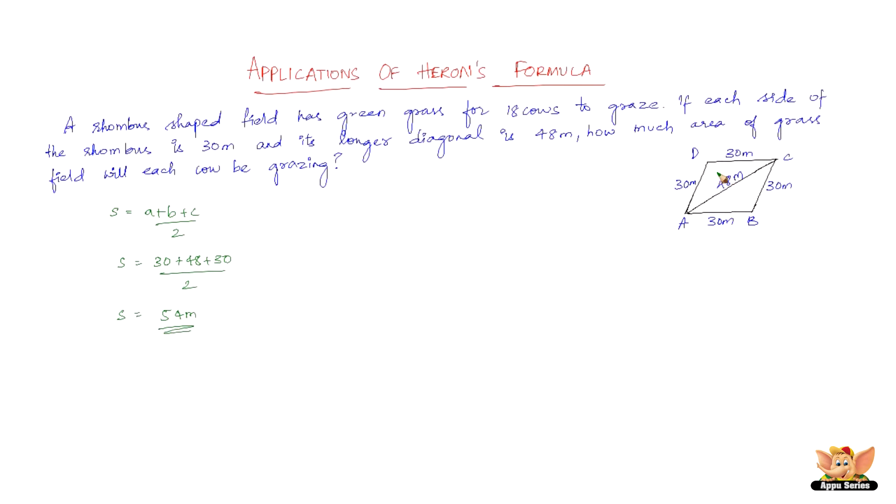Now most importantly, both the triangles are equal in all the aspects. So now all we need to do is, area of triangle ABC is equal to area of triangle ADC. So we just have to find the area of one of the triangles using Heron's formula. Therefore, area of triangle ABC equals area of triangle ADC equals root of 54 into 54 minus 30 into 54 minus 30 into 54 minus 48, which is nothing but 54 into 24 into 24 into 6. And the square root of this is nothing but 432 meters square.